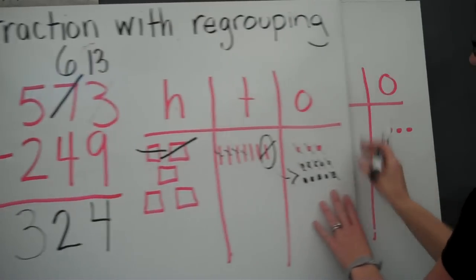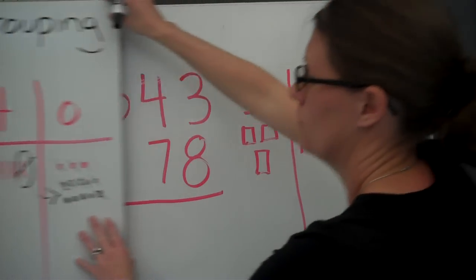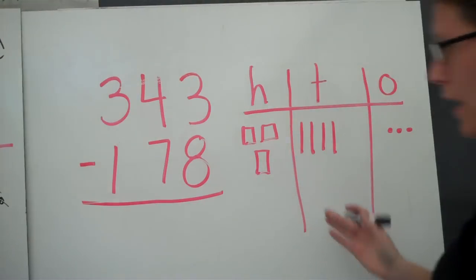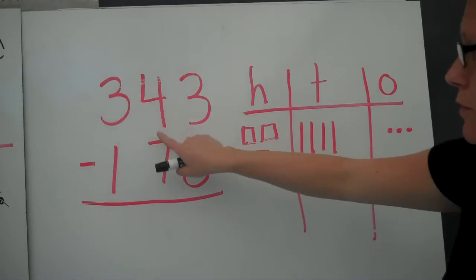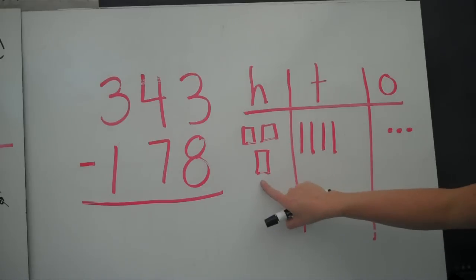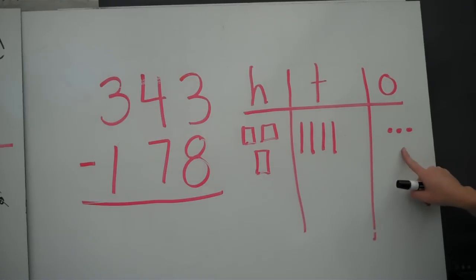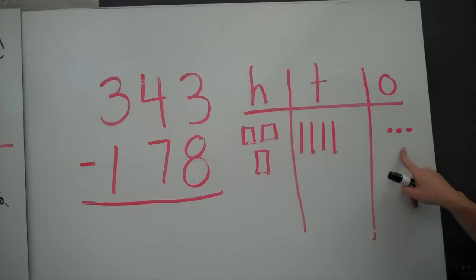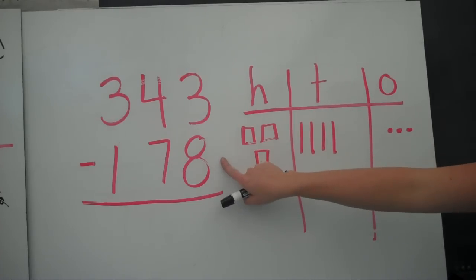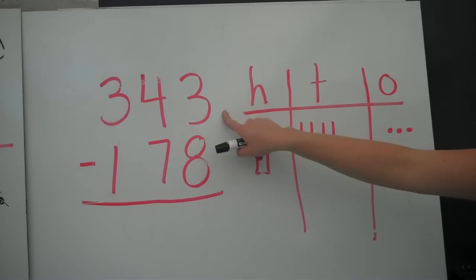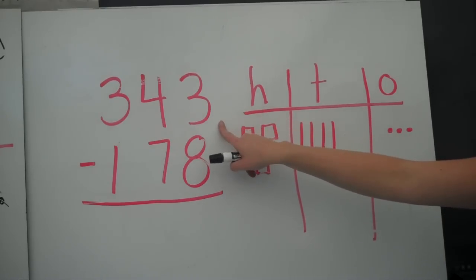Let's try another one. I went ahead and drew out our blocks. 343. I'm going to start in the ones because that's where you always start — when you add and subtract, you always start in the ones column. I have 3 ones, but I need to take 8 away. Again, I can't do that. 8 is bigger than 3, I only have 3.